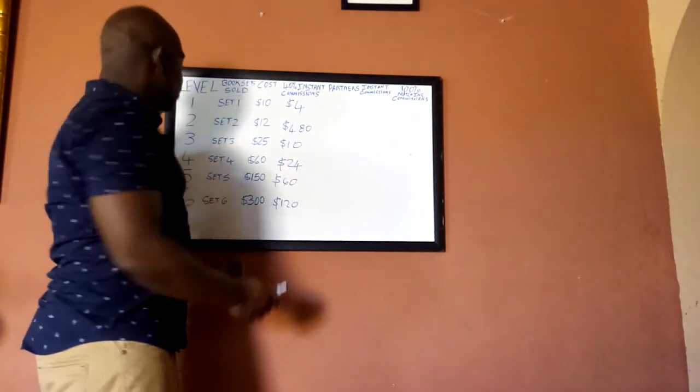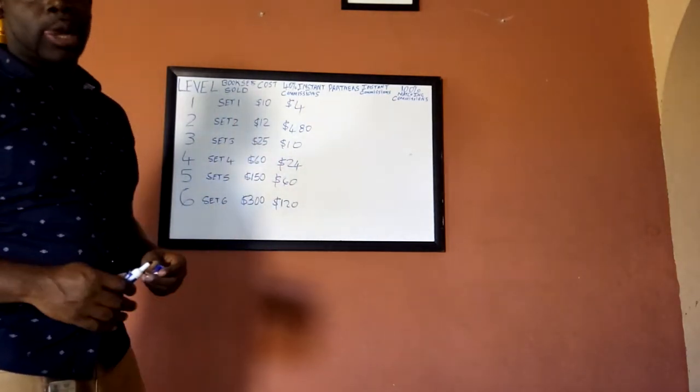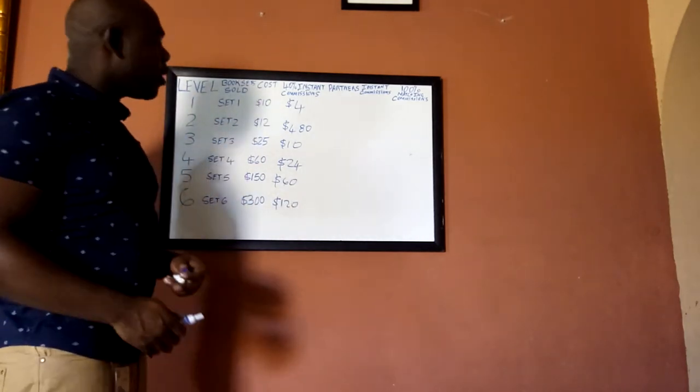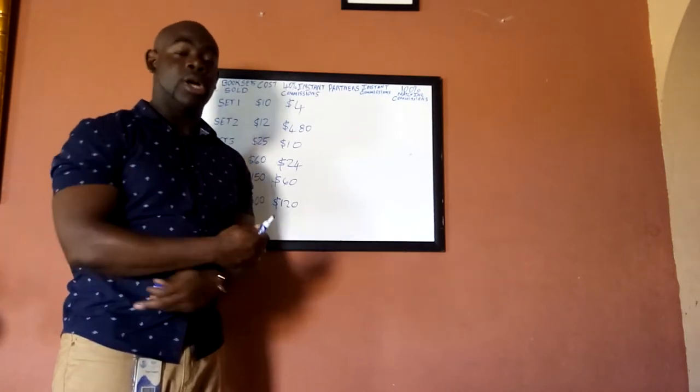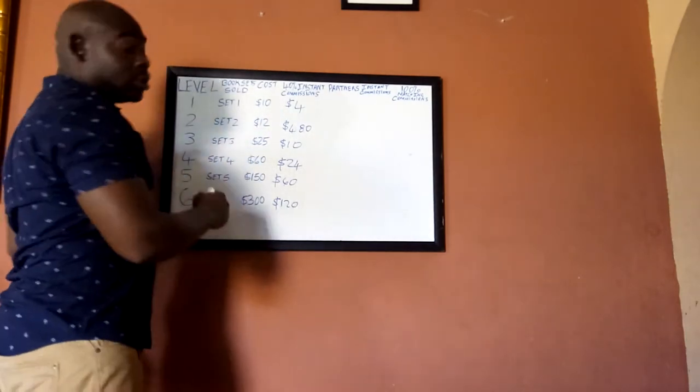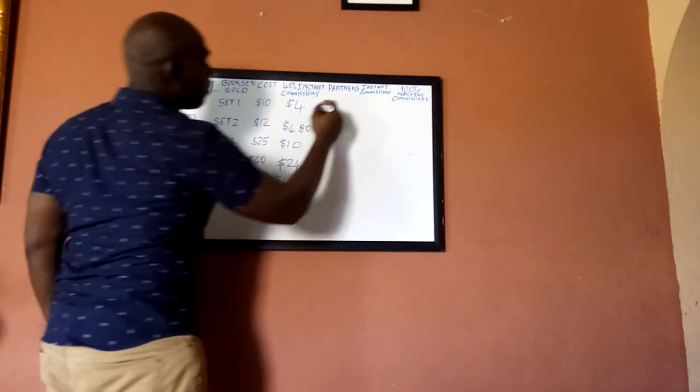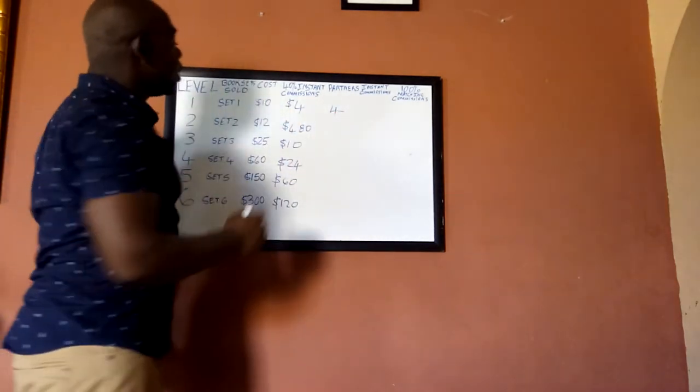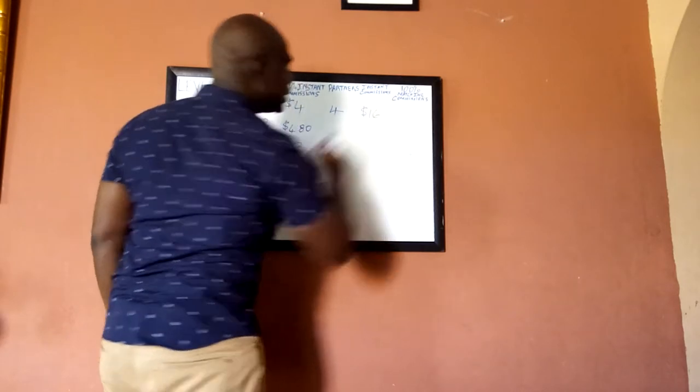Now the company requires us to teach at least four persons within our contact list who we care about, how we can build together, because this company is all about teamwork for people who just want to work together. So the company says build by a formula of four. So you partner with four persons here who bought their first set of books, then you will get paid 40% from those four people, so you get paid $16 here.